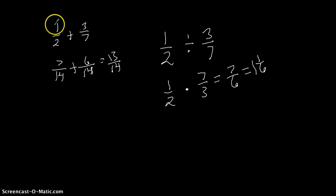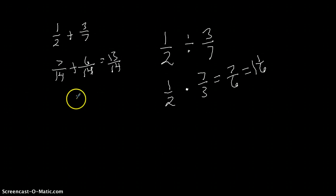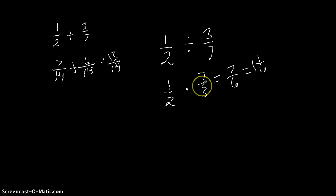Looking at the addition problem, after we came up with like denominators of fourteen and fourteen, the only part we actually added was the numerators — seven and six gave me thirteen, and fourteen stayed as the denominator. So I just wanted to mention: if you've got good background knowledge on adding fractions, there are some differences when dividing. One difference: we don't care about like denominators. The other difference: we flip our second fraction and multiply straight across — numerator times numerator, denominator times denominator.